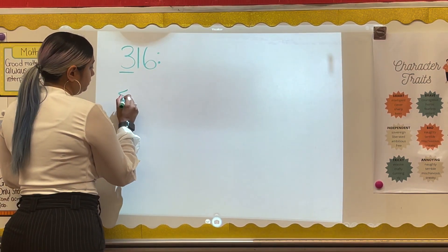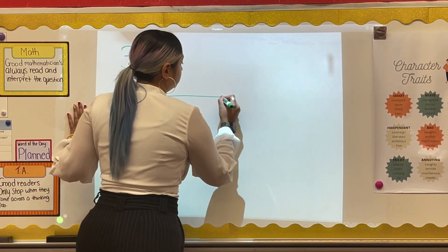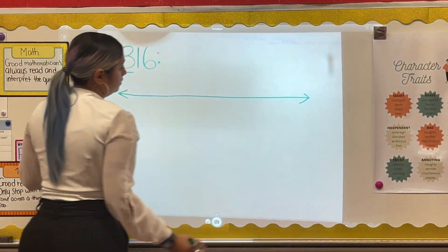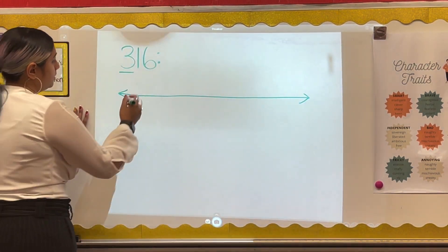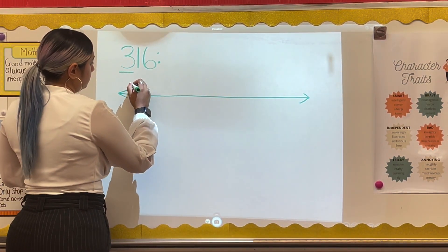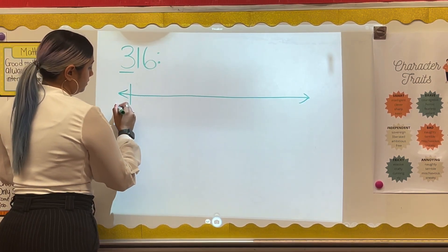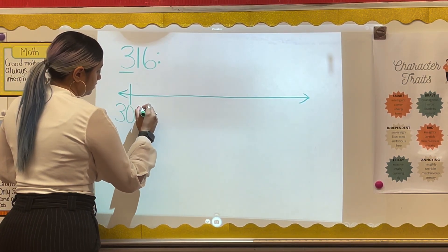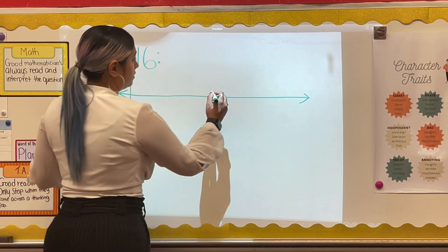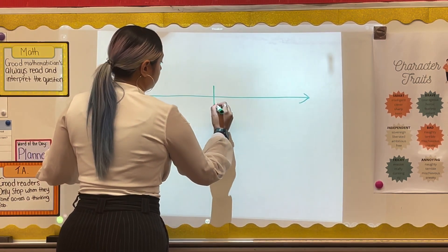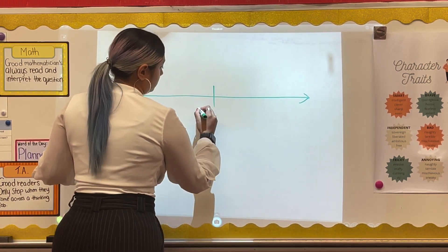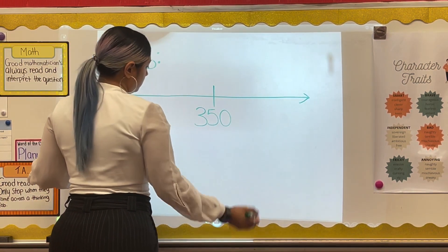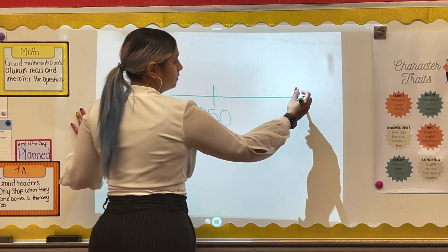If I count by 100, I know the 100 that comes before 316 is 300, and the 100 that comes after is 400. So I'm going to go ahead and plot that on my number line. I'm also going to plot my midpoint, or my halfway point, which in this case is 350.